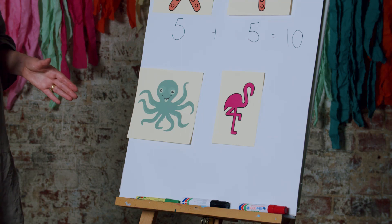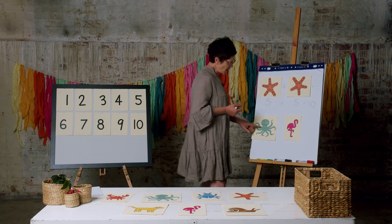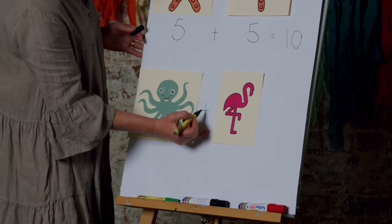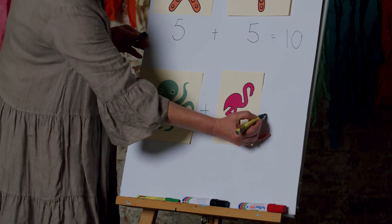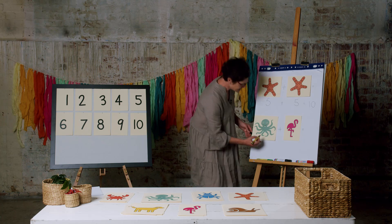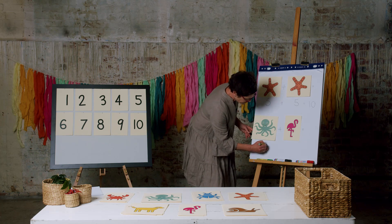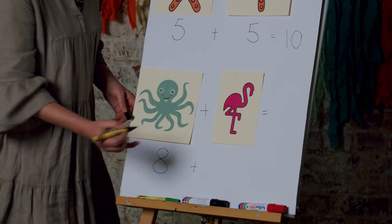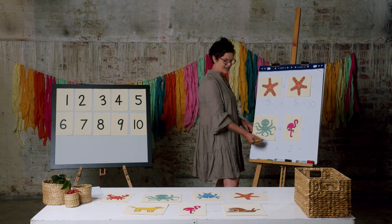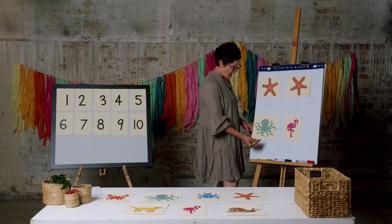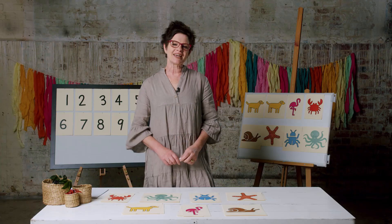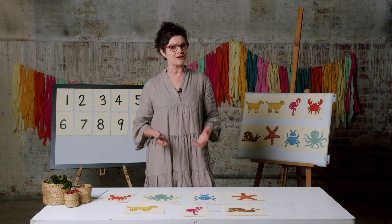Let's have a look at our second animal parade. An octopus plus a bird equals — an octopus has eight, and a bird has two feet. It does look similar: eight and two make ten. So we've made two parades of ten feet.